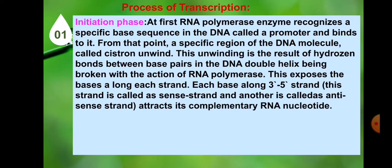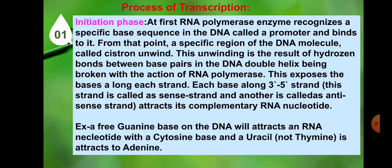Process of transcription — Initiation phase. At first, RNA polymerase enzyme recognizes a specific base sequence in the DNA called a promoter and binds to it. From that point, a specific region of the DNA molecule called the cistron unwinds. This unwinding is the result of hydrogen bonds between base pairs in the DNA double helix being broken by the action of RNA polymerase, exposing the bases along each strand. Each base along the 3' to 5' strand attracts its complementary RNA nucleotide — for example, a free guanine base on the DNA will attract an RNA nucleotide with a cytosine base, and uracil is attracted to adenine.